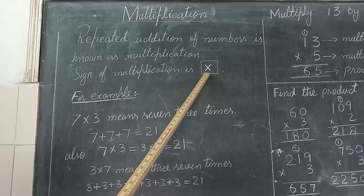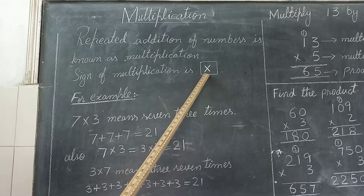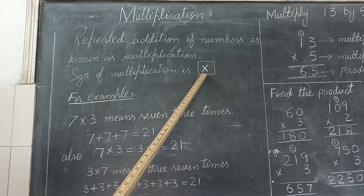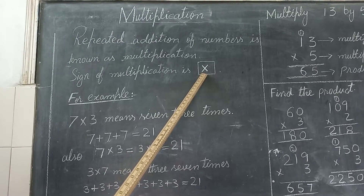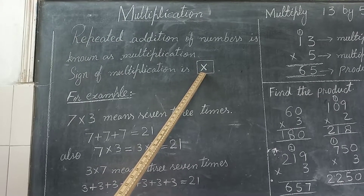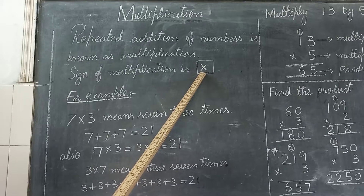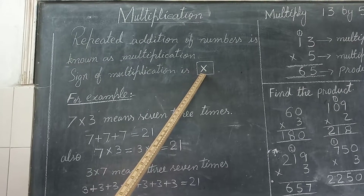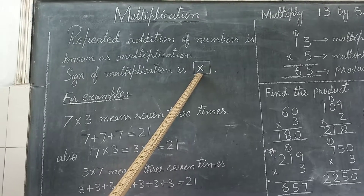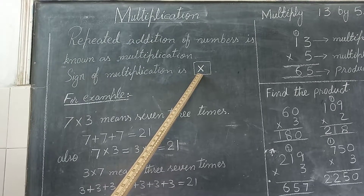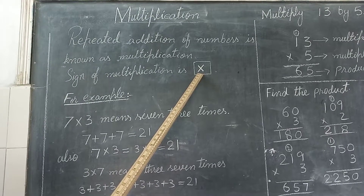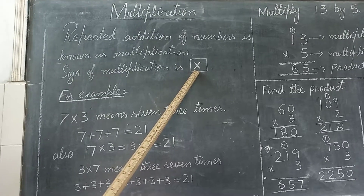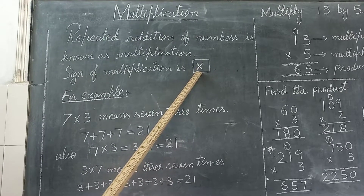Two ones are two — one time two gives two. Two times two gives four. Two threes: aap two ko three times plus karein to aapke paas six aa jaati hai. Two fours are eight — aap two ko four times plus karein to aapke paas eight aa jaati hai. Isi tarah se pura table aapke paas aa jaata hai.